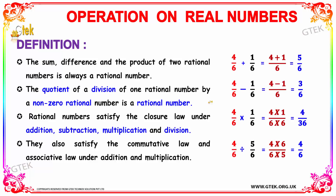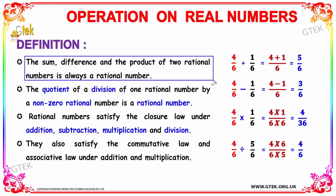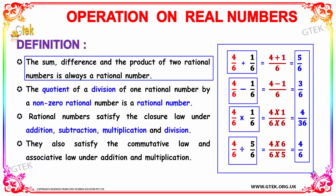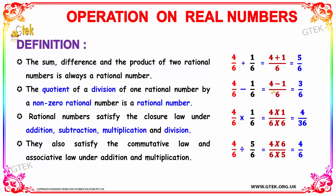Let's deal with the definition of operations based on real numbers. The sum, difference, and product of two rational numbers is always a rational number. We have some examples: here is the sum, here is the difference, here is the product, and here is the division. So the sum, difference, and product of any two rational numbers is always a rational number.